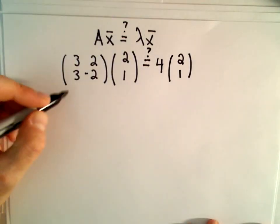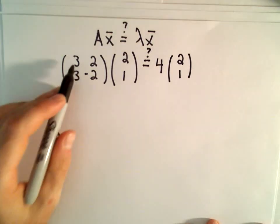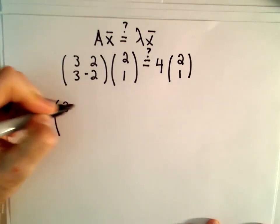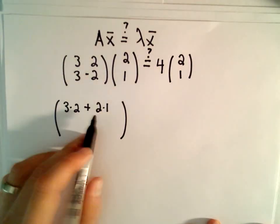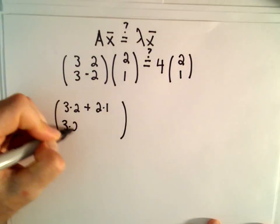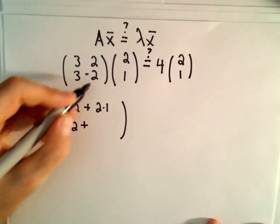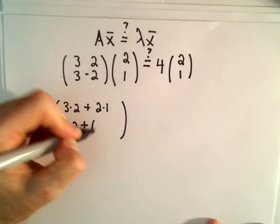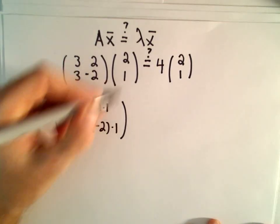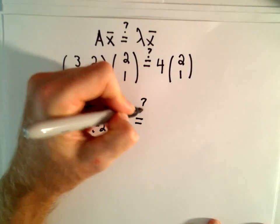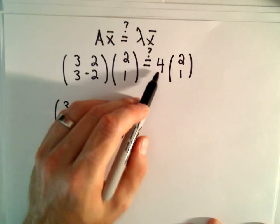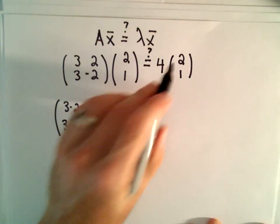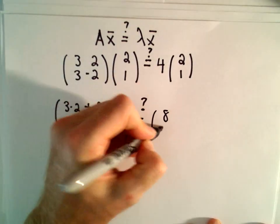Well, all we have to do is just a bit of arithmetic. So on the left side, we'll do our matrix multiplication. 3 multiplied by 2 plus 2 multiplied by 1. That'll be our first row. And then our second row, we'll have 3 multiplied by 2 plus negative 2 multiplied by 1. On the right side, we just multiply our entries 2 and 1 by 4. 4 times 2 is 8, 4 times 1 is 4.